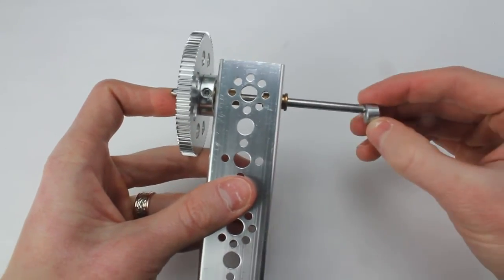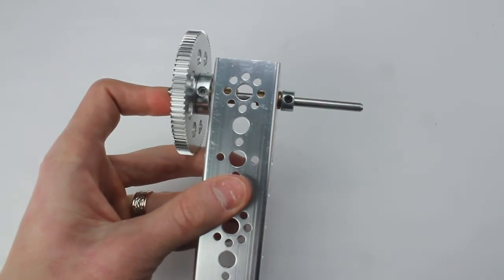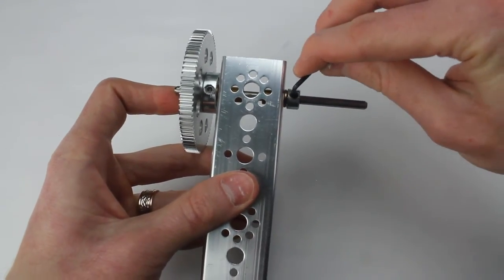Finally, secure the axle with a shaft collar, ensuring to again align the set screw with the flat part of the axle.